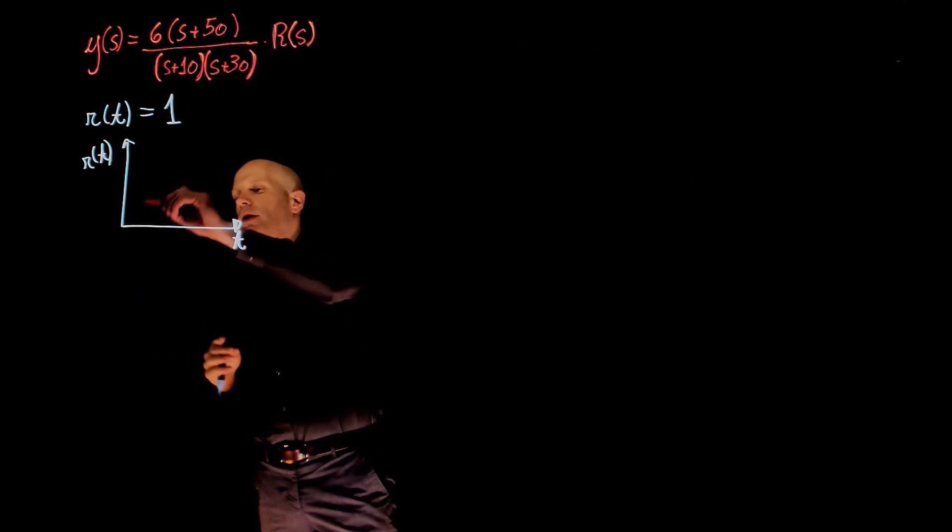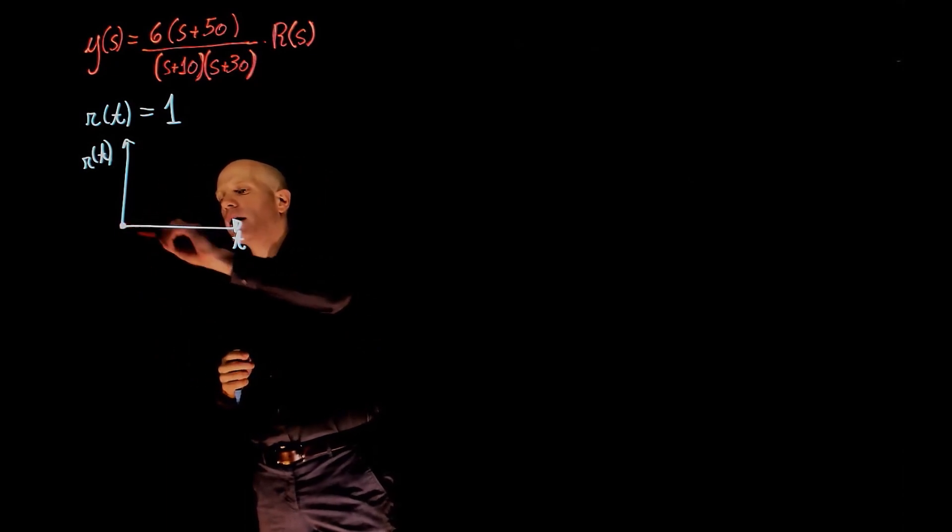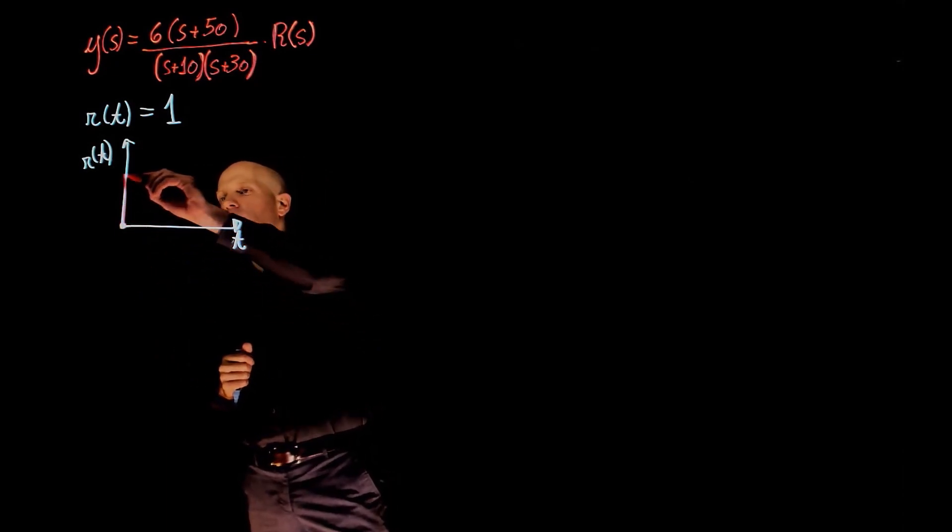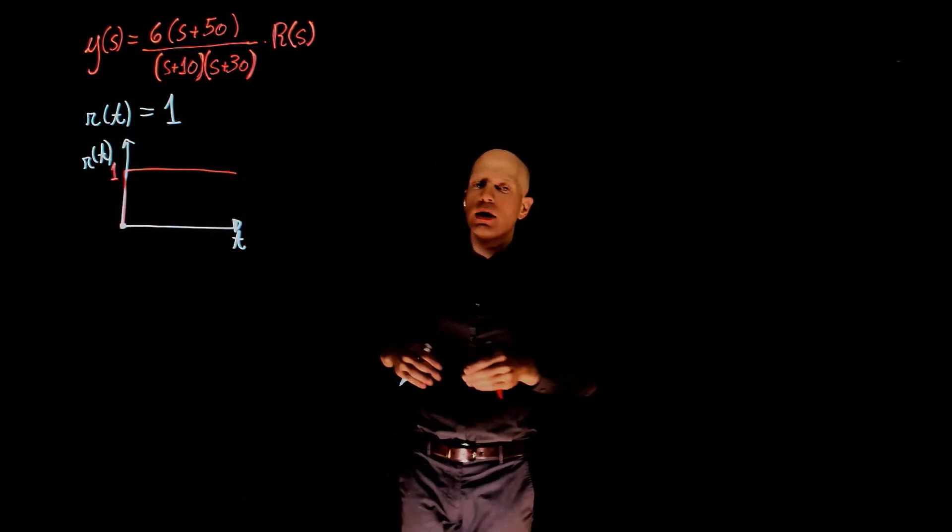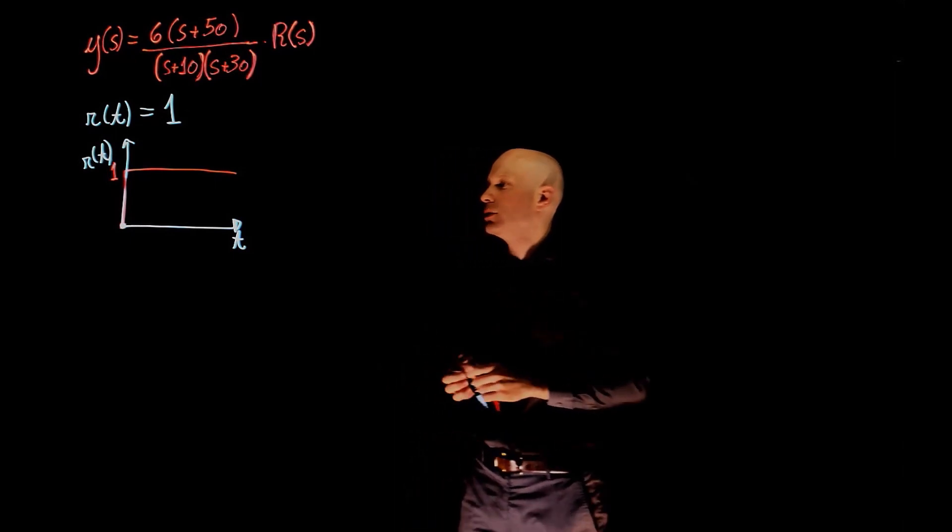If you graph this function, it goes from 0 at time equals 0, goes to 1 and the value of 1 is then held as the desired position for the printer.